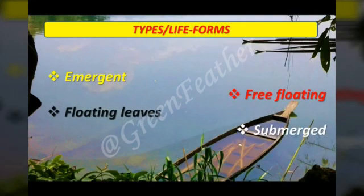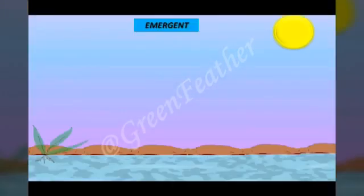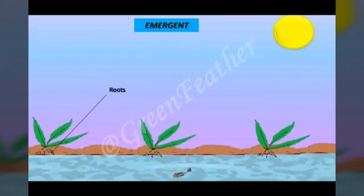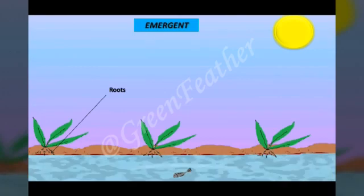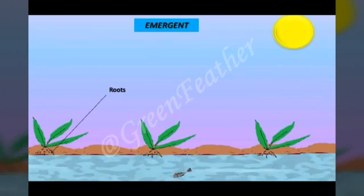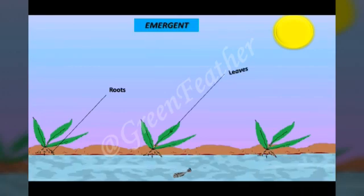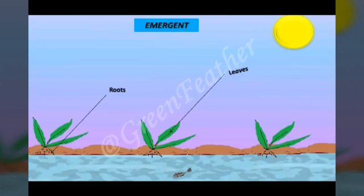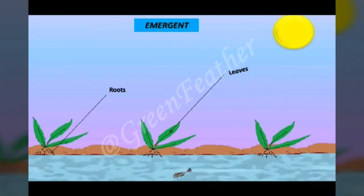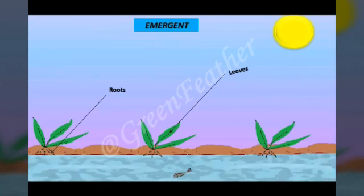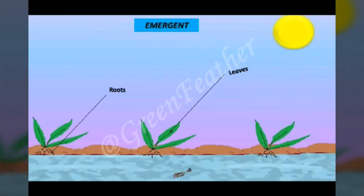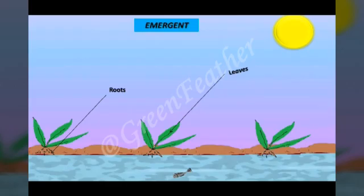Emergent plants are rooted in the sediment underwater but have their leaves and stems above the water surface. They need to be strongly rooted in water for structural support. Let us see some common emergent species.